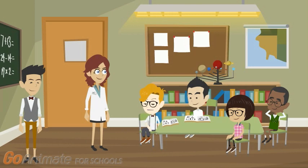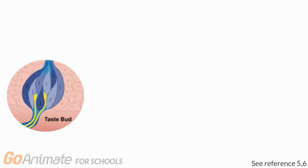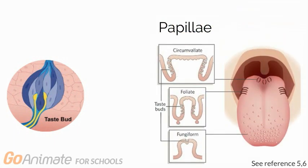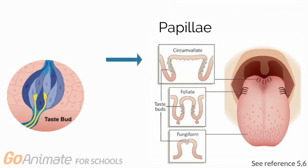Wait, so if tongue maps don't exist... Taste perception is made possible by the taste buds, which are in the papillae. The papillae are the bumps that are on the tongue. Human taste buds are found in the circumvallate, fungiform, and foliate papillae, and they react to sweet, salty, sour, bitter, and umami stimuli.